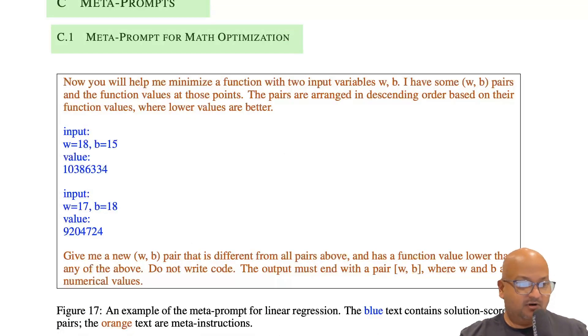This is what the meta prompt for linear regression looks like. There is a task description. So it says, I have some WB pairs and the function values at those points. So you give it a couple of examples and then you ask the LLM to generate new WB pairs that are different from the ones given and lower the value of the function.